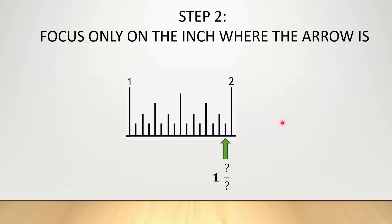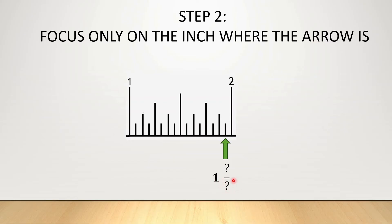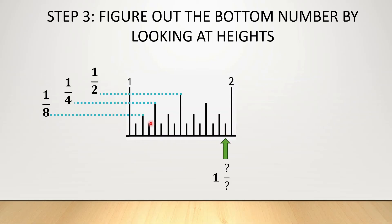Next, to figure out what that something over something is, you want to focus only on that inch segment where the arrow's at — ignore everything else. Now I'm only looking at this inch segment. To figure out the bottom number, or the denominator, we're going to look at the heights of the lines. The second tallest lines are half inches or 1 over 2 — it's not the same height, so the bottom number is not a 2. It's also not the same height as quarters, so not a 4, and not the same height as eighths. However, this green arrow lines up with the sixteenths, so we write 16 on our bottom number.